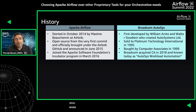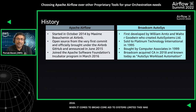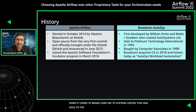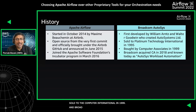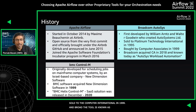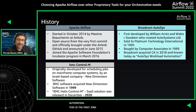When it comes to Broadcom Autosys, it was first developed by William Ernst and Walter Goodwin who created Autosystems Limited. It was sold to Platinum Technology International in 1995, and Computer Associates bought Platinum Technology International in 1999. Broadcom then acquired Computer Associates in 2018, and the tool is today known as Autosys Workload Automation. For Control-M, it was originally developed for scheduling jobs on mainframe computer systems by an Israeli-based company called New Dimension Software.